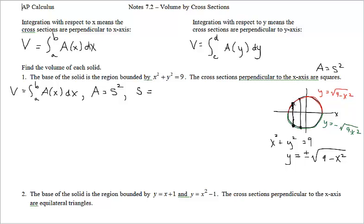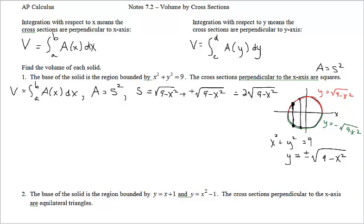To find the length and make sure it's positive, we do top curve minus bottom curve: √(9 − x²) minus −√(9 − x²). Collecting like terms, the side length is 2√(9 − x²). This is the side length of each and every one of these cross sections based on what x-value you're at in the region from negative 3 to 3. My left limit is negative 3 and right limit is positive 3 — I won't have cross sections outside those bounds.